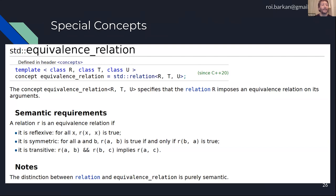One last example related to semantics: the concept called equivalence_relation inside the standard. Interestingly, equivalence_relation is actually exactly equal to another concept called std::relation in terms of syntax — those are exactly the same. Even the notes say that the only distinction between these two is semantic.